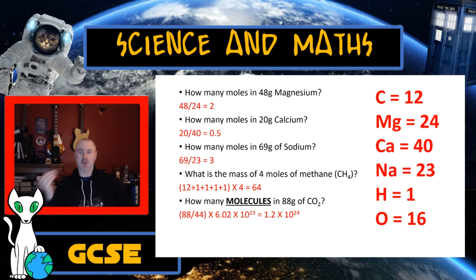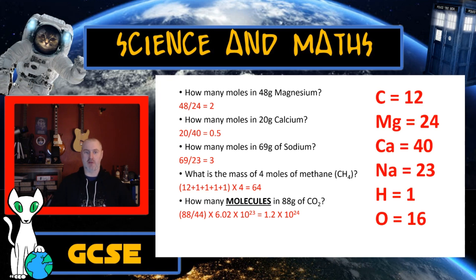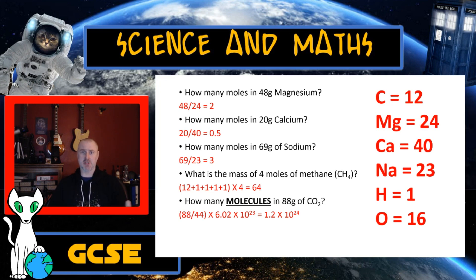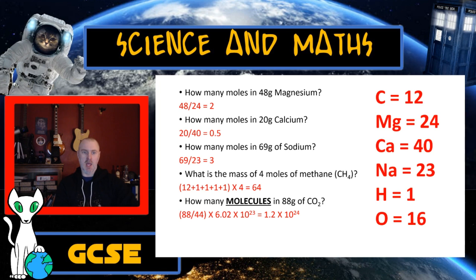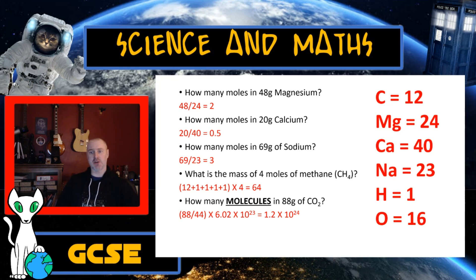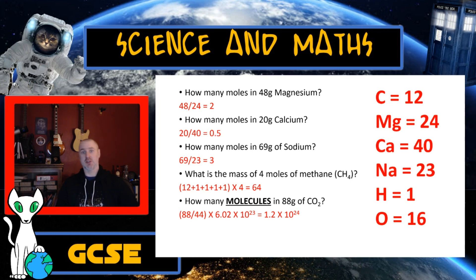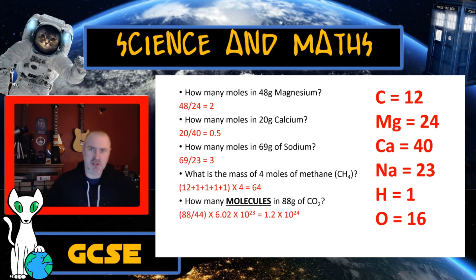Question 2: We have 20 grams of calcium. The mass number of calcium is 40. So 20 ÷ 40 = 0.5 moles — half a mole of calcium. Don't be afraid if the answer comes out less than one; it just means your mass is smaller than the mass number. Question 3: 69 grams of sodium. Sodium's mass number is 23, so 69 ÷ 23 = 3 moles of sodium.